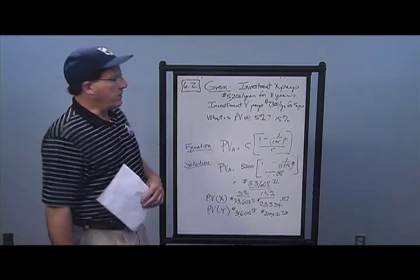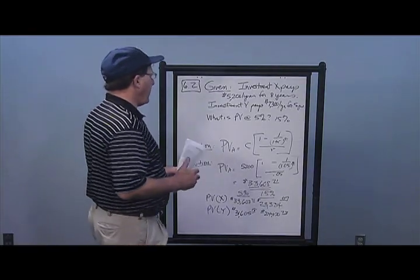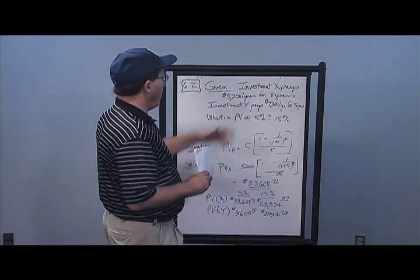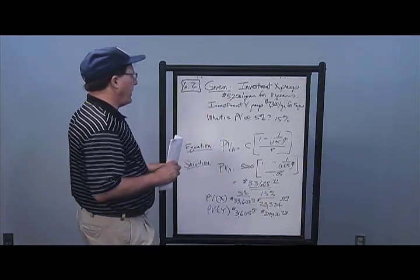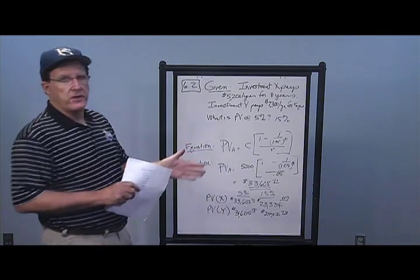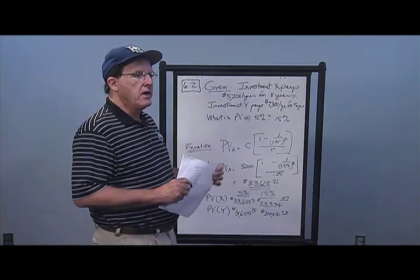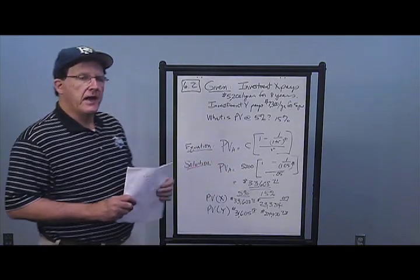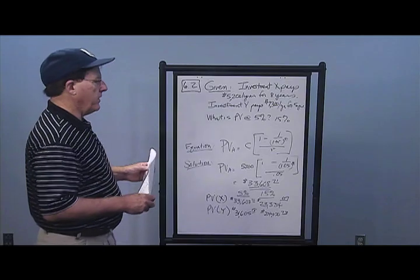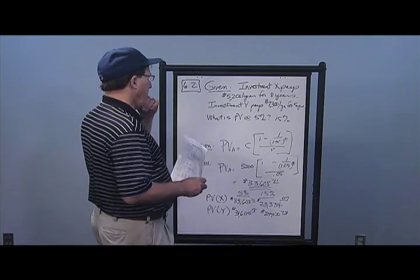In Problem 2, Investment X pays $5,200 per year for eight years — $5,200, $5,200, and so on. So we do indeed have an annuity and we can use the annuity formulas.